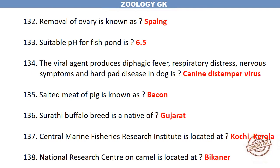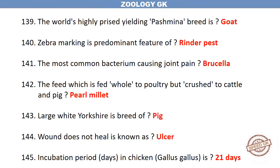Salted meat of pig is known as bacon. The Surati buffalo breed is a native of Gujarat. The Central Marine Fisheries Research Institute is located at Kochi, Kerala. The National Research Centre on Camel is located at Bikaner. The world's highly prized pashmina breed is goat.